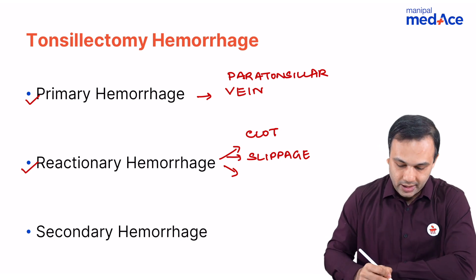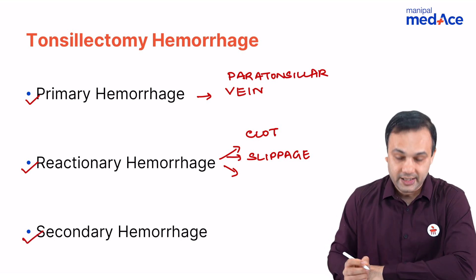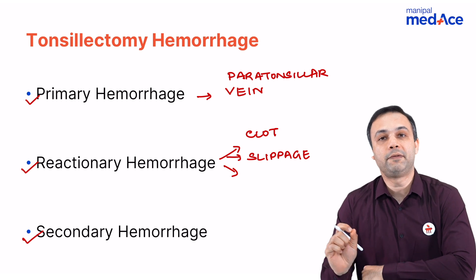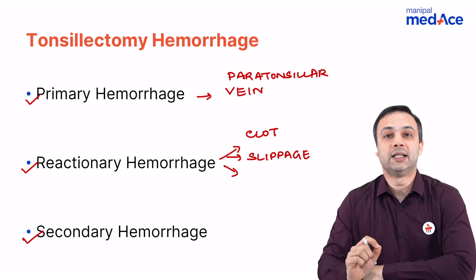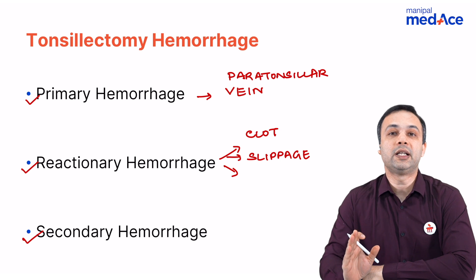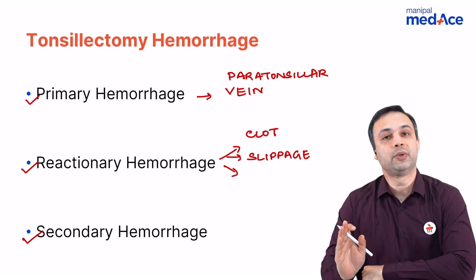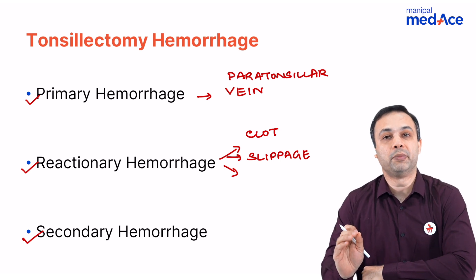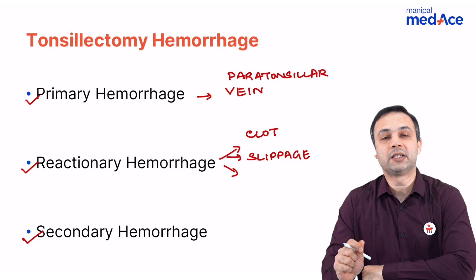The third important type of hemorrhage is a secondary hemorrhage, which usually occurs 5 to 10 days following the procedure. This is because of infection, and how do you treat it? You give IV antibiotics. If it continues to bleed despite IV antibiotics, we need to take the patient to the operative room and suture pillar to pillar after achieving hemostasis.